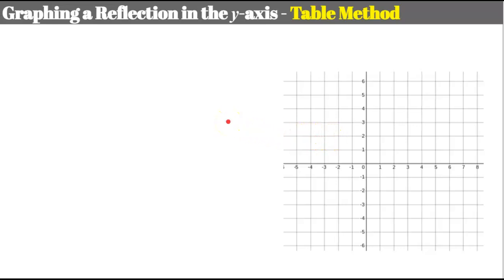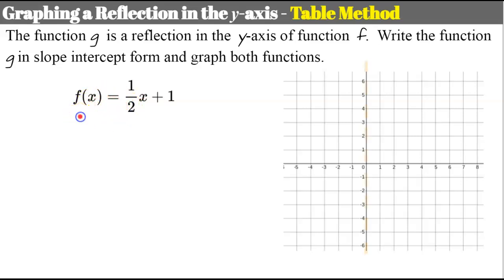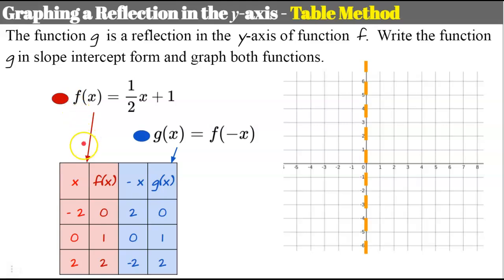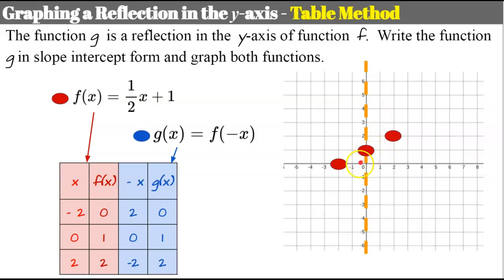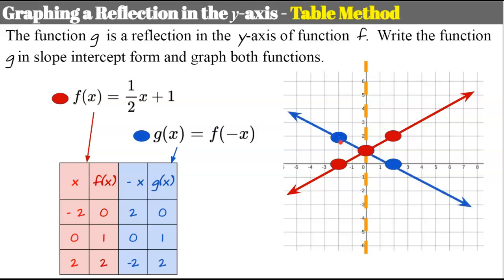Now reflecting in the y-axis using the table method. For function f with inputs negative 2, 0, and 2, outputs are 0, 1, and 2. For the reflection g, I change all inputs to their opposites: negative 2 becomes positive 2, 0 stays 0, and 2 becomes negative 2. Outputs stay the same. Graphing: function f gives (negative 2, 0), (0, 1), (2, 2); function g gives (2, 0), (0, 1), (negative 2, 2). Y-intercept of 1 and slope of negative 1/2.